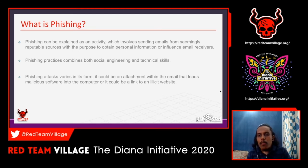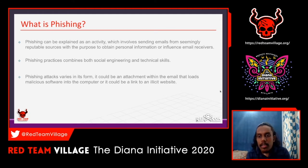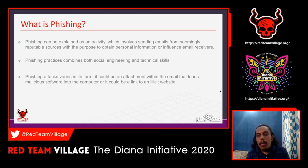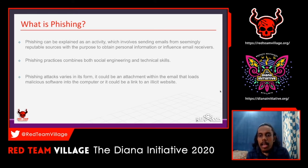Phishing is often the first level of attack vector or initial compromise in adversarial campaigns. When attacking organizations like banks or financial services, adversaries most commonly use targeted phishing — also called spear phishing. Phishing has been one of the biggest exploited vulnerabilities, especially during COVID times where many attacks have been reported in the news.